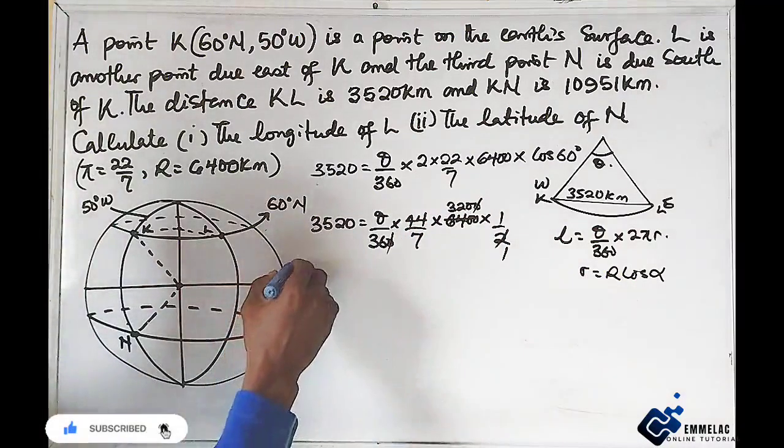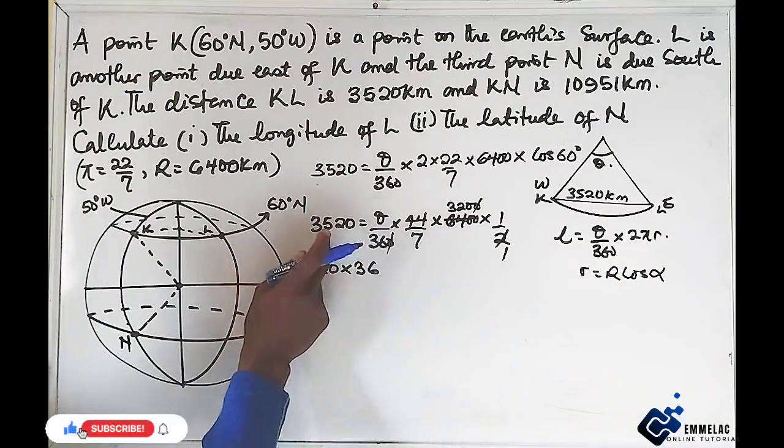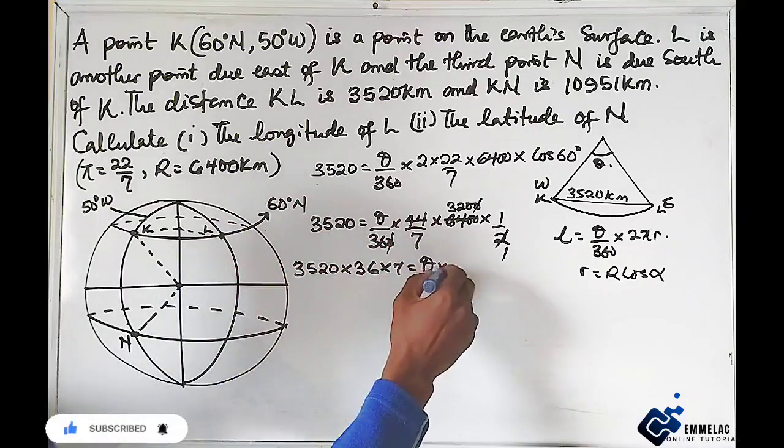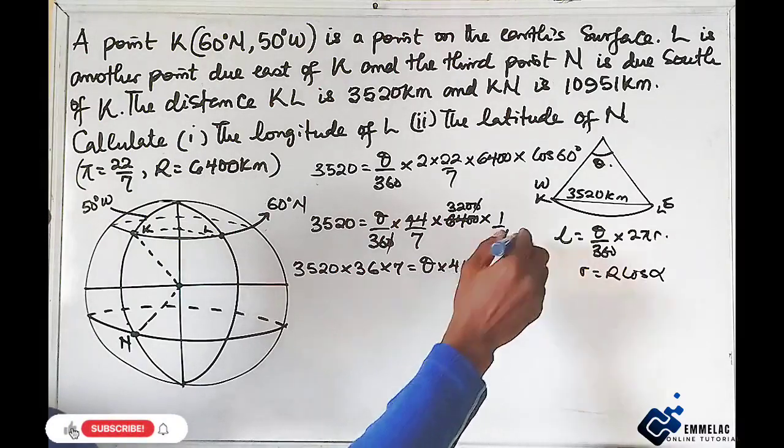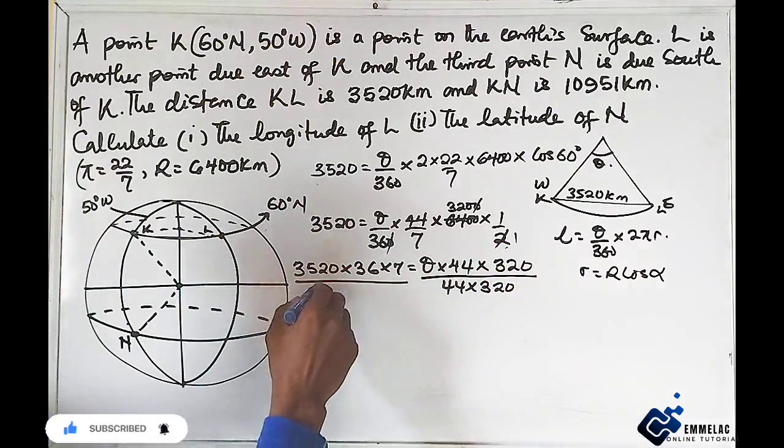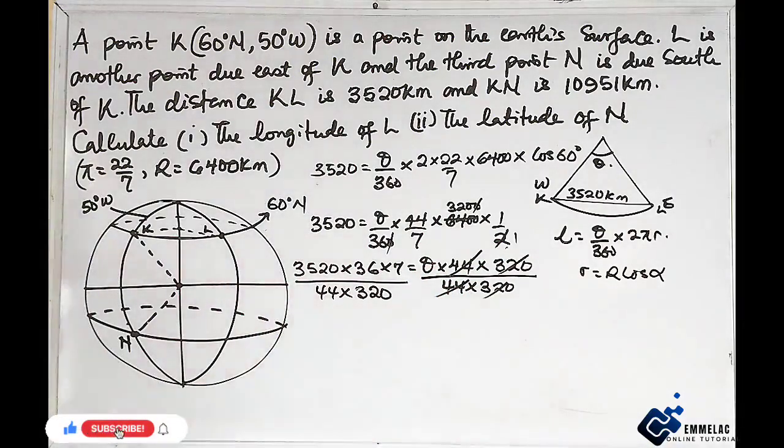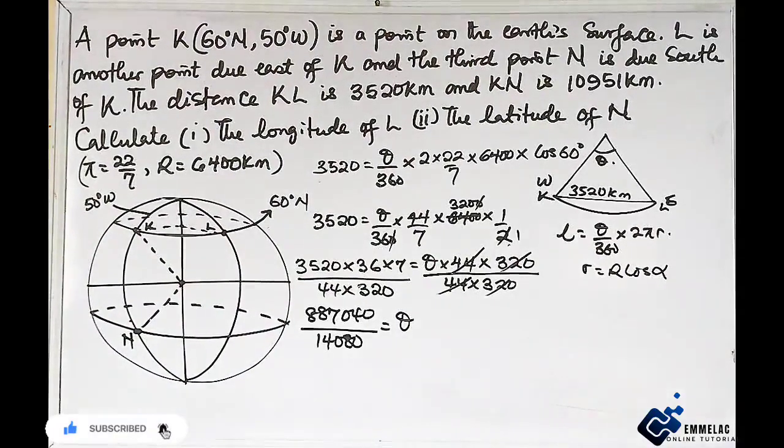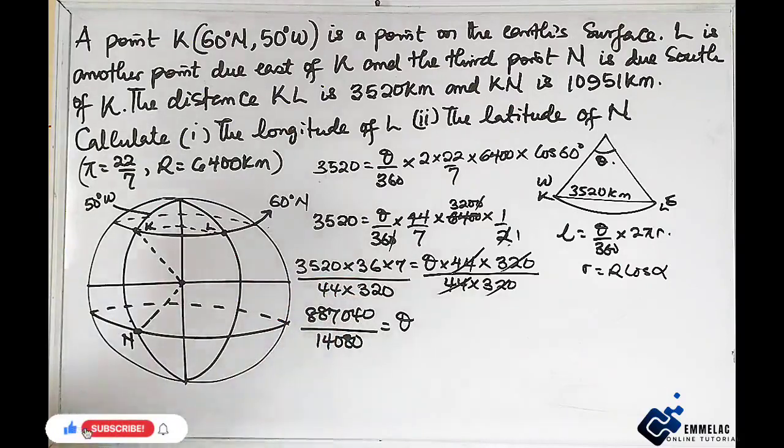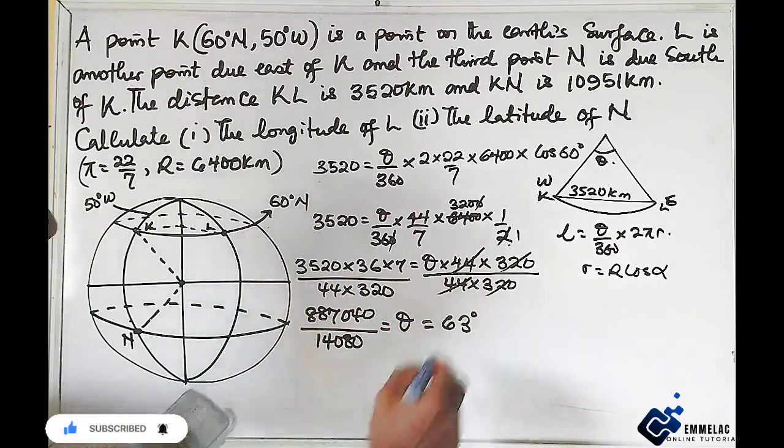Here we have 3520 times 360, because the numerator here, cross multiplying, we multiply the numerator at the left-hand side, then times 7, then equals theta times 44 times 320. We can divide both sides by the product of 44 and 320 to make theta the subject. Punching our calculator, the product of the numerator is 887040, and the denominator is 14080. When we divide this fraction, we have 63 degree.